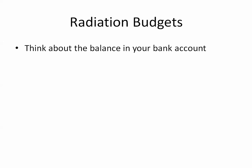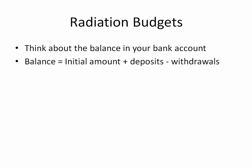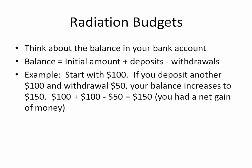Radiation budgets are very simple. You can think about them just like the balance in your bank account. To figure it out, you would take the initial amount of money you have, add the deposits, and subtract your withdrawals. For example, if you start with $100, deposit another $100, and then withdraw $50, your balance would increase to $150. You would have a net gain of money because more money came into the account than you took out.